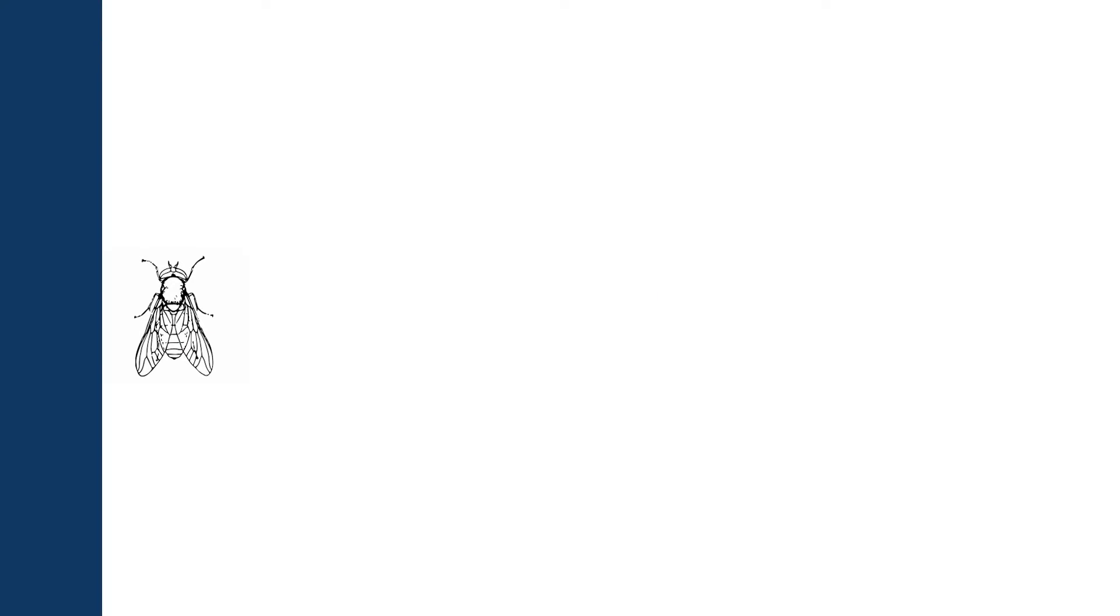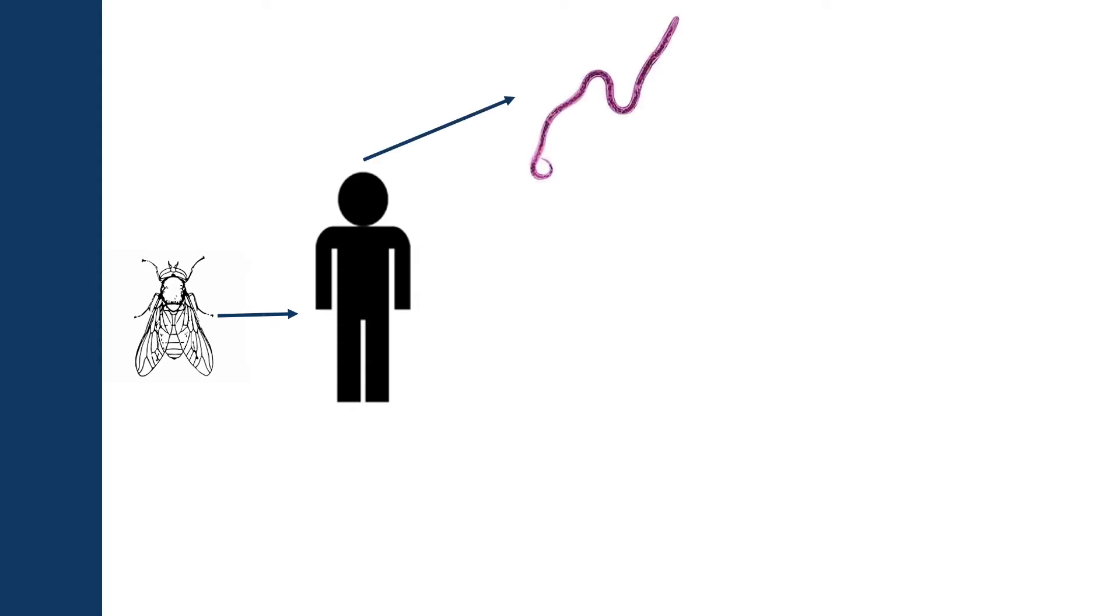The parasitic worm Onchocerca volvulus is transmitted by black flies that live in local riverbeds. The flies bite humans and transmit the parasite into the bloodstream. Female worms then sequester themselves in nodules in the subcutaneous tissue and release thousands of early-stage larvae called microfilariae into the bloodstream.